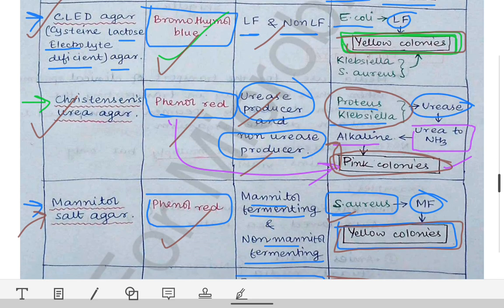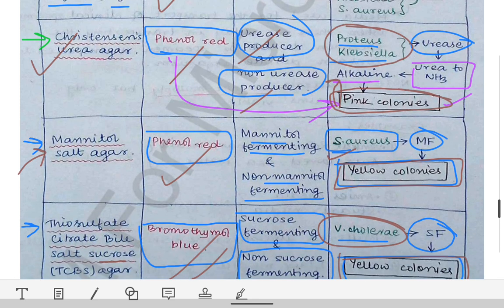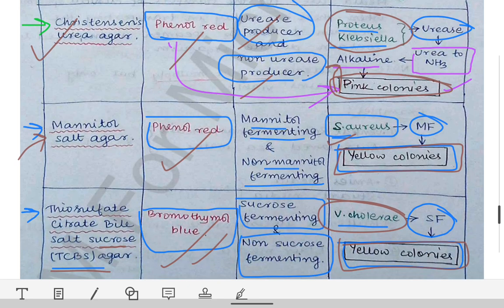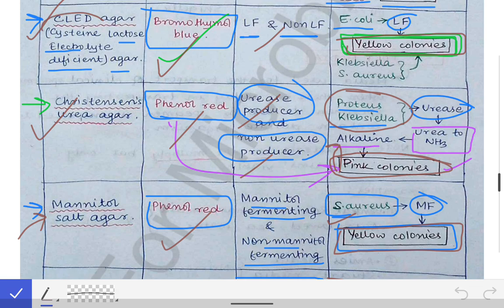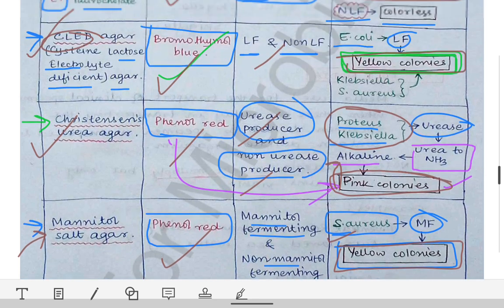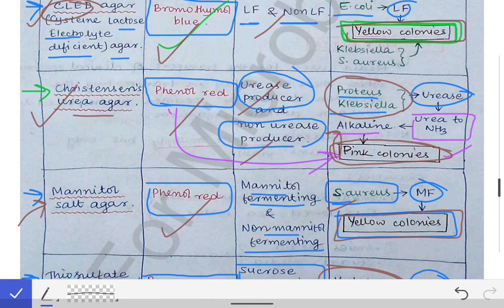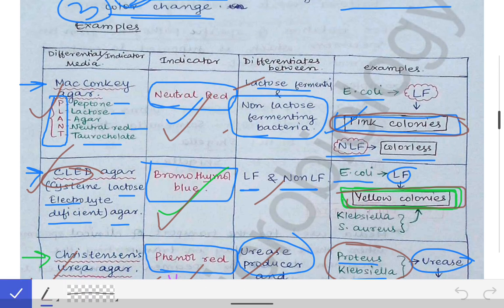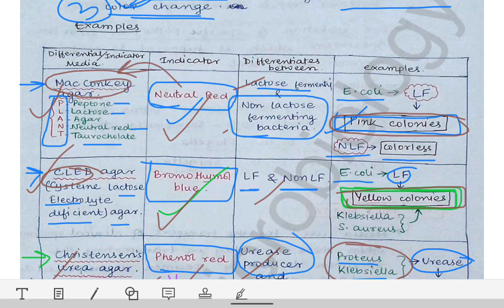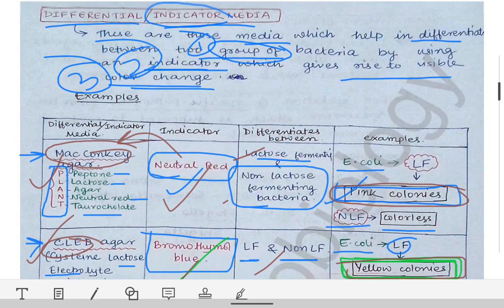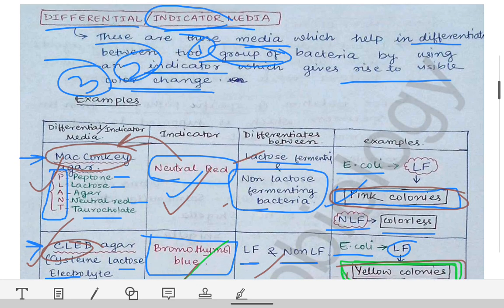Remember: TCBS and CLED — the short-named agars — both contain bromothymol blue. Christensen's urea agar and mannitol salt agar both contain phenol red. Neutral red is present only in MacConkey agar. Please remember these indicators, the examples, and the different color changes. This concludes the discussion of culture medias.